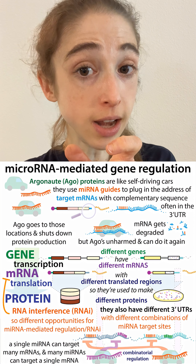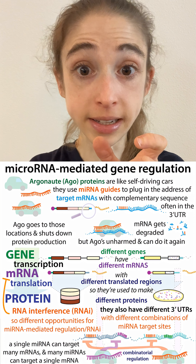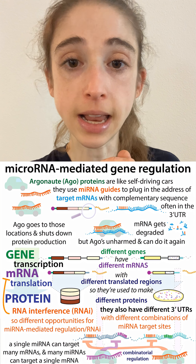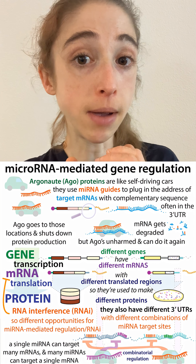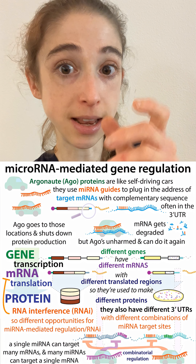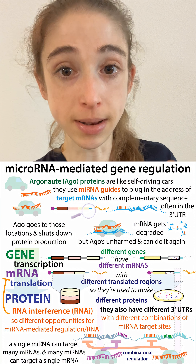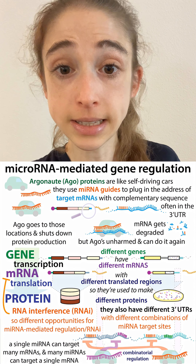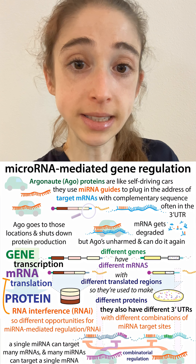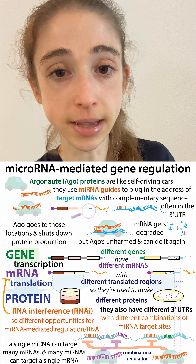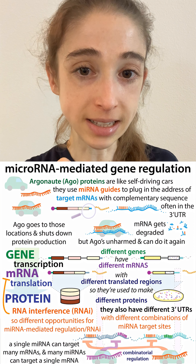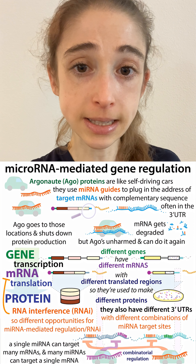Different messenger RNAs can have binding sites for multiple micro RNAs, and the same micro RNA can have binding sites in multiple different messenger RNAs. So the binding sites would be cis acting elements and the micro RNAs would be trans acting elements.